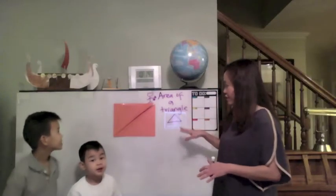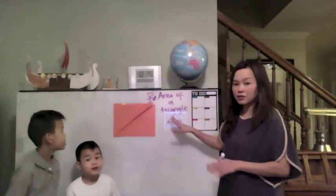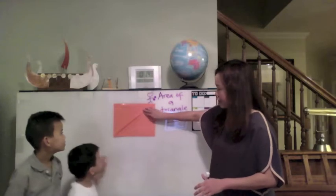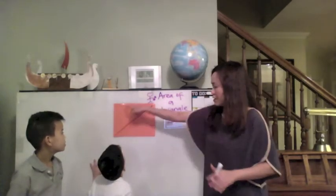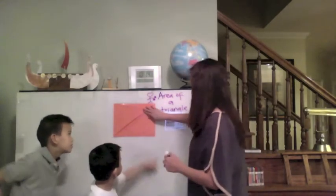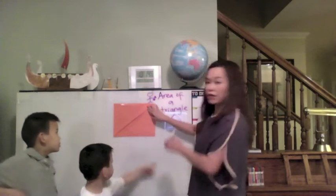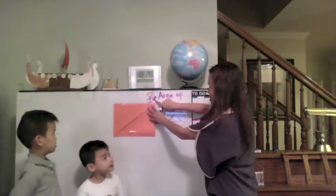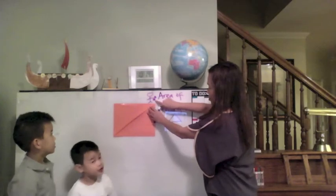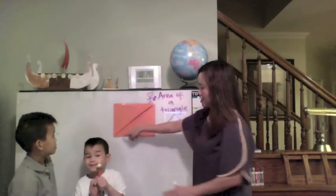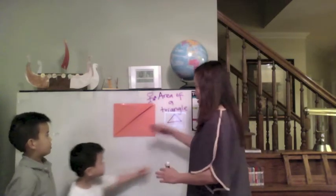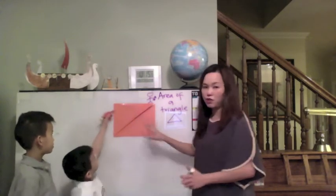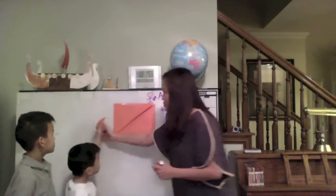Now we're going to talk about the area of a triangle. Before that, let's look at the area of this. What do you call this, Joshua? A rectangle. A rectangle, very good. On top of this rectangle, there's a boy with a skateboard, and he's trying to skate down this rectangle but he's having trouble doing that. So we're going to change this rectangle to something else in a moment.